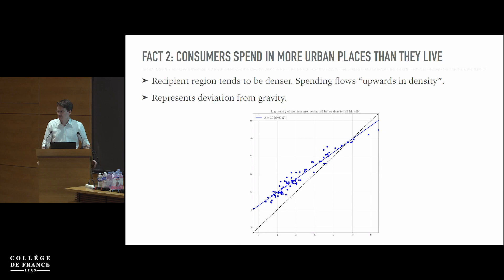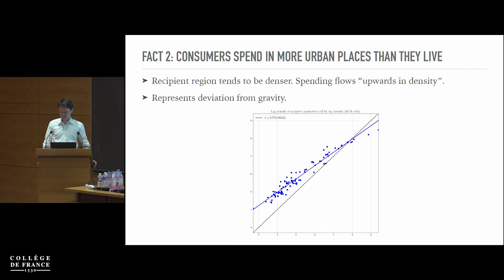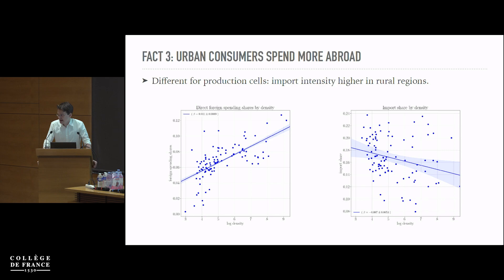There's a lot of heterogeneity in the external balance of different parts of Denmark — there's far more exports in some regions than others. That implies there doesn't have to be trade balance on a region-by-region dimension.